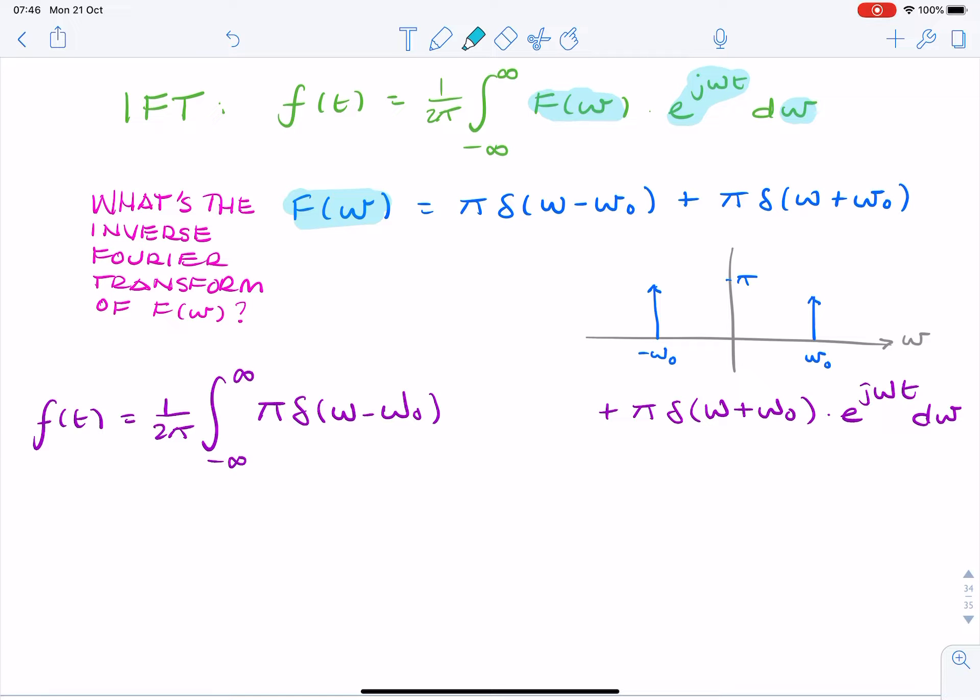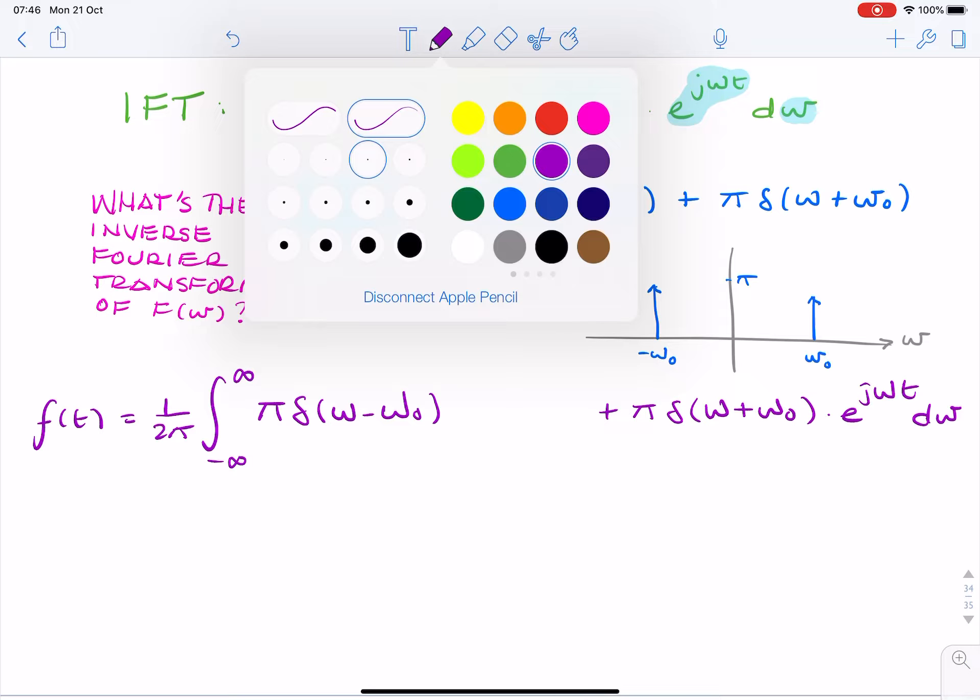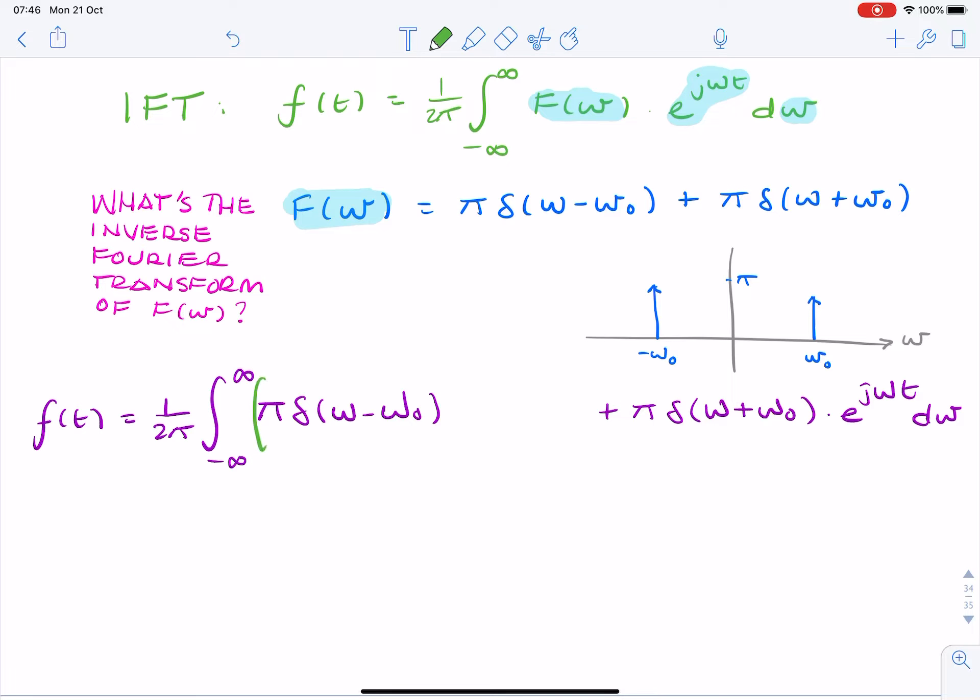Now we have, let's just put some brackets around this, it becomes less confusing. So now we have two impulses multiplied by a complex exponential. How do we integrate that? Remember the sifting property, or the sampling property of the delta Dirac function?